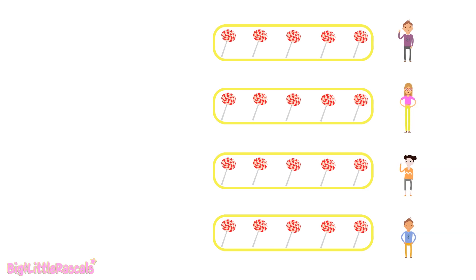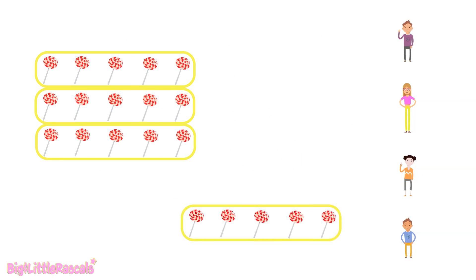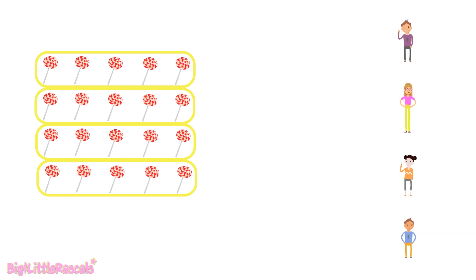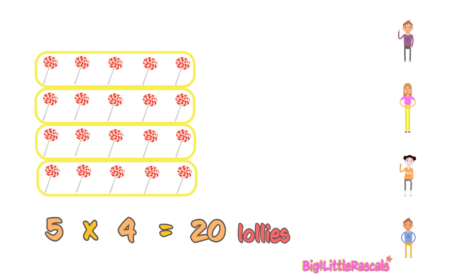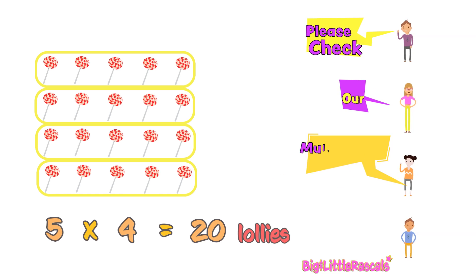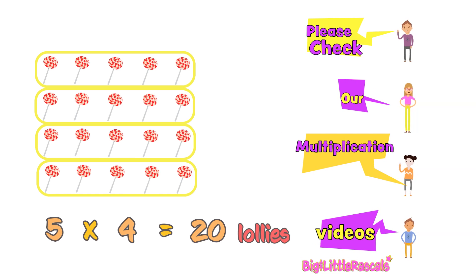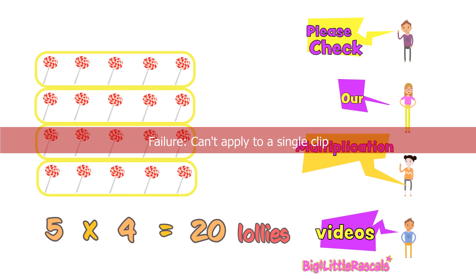But if we collect back all the 5 lollies from each person, that's 5 lollies multiplied by 4 persons — we get the result back as 20 lollies. Therefore, boys and girls, division and multiplication are actually the opposite of each other. If you are not familiar with multiplication, not to worry — please do check out our fun learning videos about multiplication and learn multiplication in fun ways.